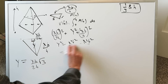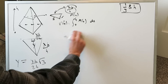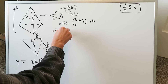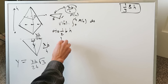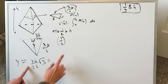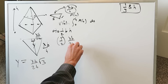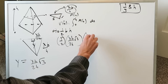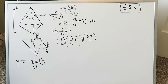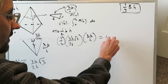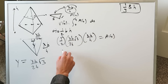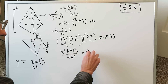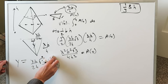Now, this slice has a certain area which is half times base times height. The height is Y, which is XB over 2H times root 3, and the base is S, which equals XB over H. Combining all of this, the area with respect to X equals X² times B² times root 3 over 4H².